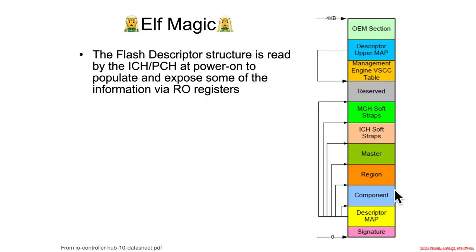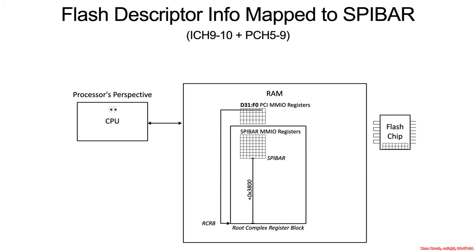Despite the lack of publicly detailed documentation for these data structures, there is some useful ELF magic to know about. The PCH or ICH hardware actually reads and parses this data structure at boot time, reads from the flash chip at offset 0, and maps some of those elements into memory at various registers in the spybar region, where we can inspect them instead.